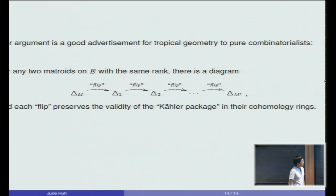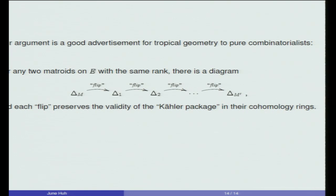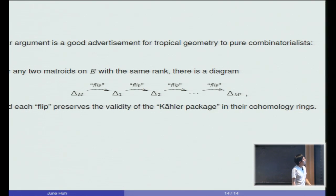And the argument is a good advertisement for tropical geometry to pure combinatorialists, in my opinion, because it goes as follows: if you give me two matroids on the same ground set and of the same rank, then I view them as two tropical varieties, delta_M here, delta_M' here. And how the proof goes is like this: we define a certain local modification that we call flip. If you flip a tropical variety, you get another tropical variety. And we prove that given any two matroids of the same size, I can repeatedly flip it to go from one to the other. And we show that the validity of the Kähler package, the two assertions that you have seen in the previous slide, are preserved under this local modification process that we call flip.